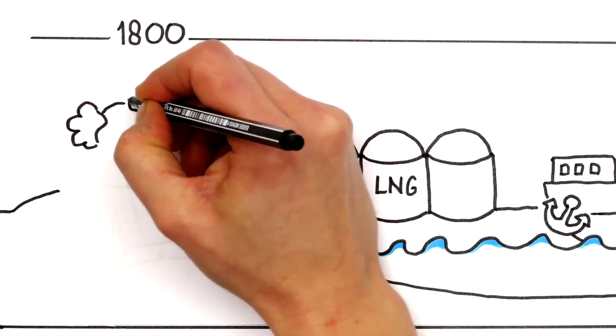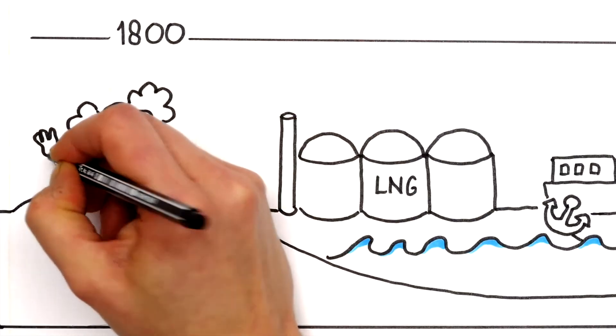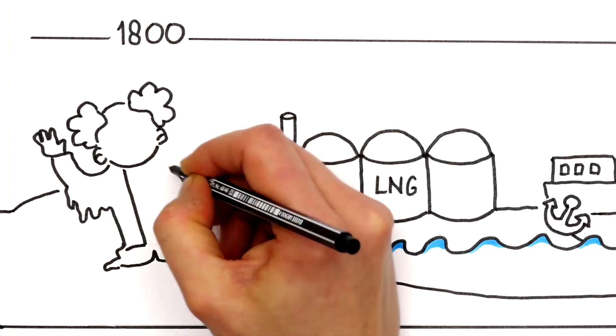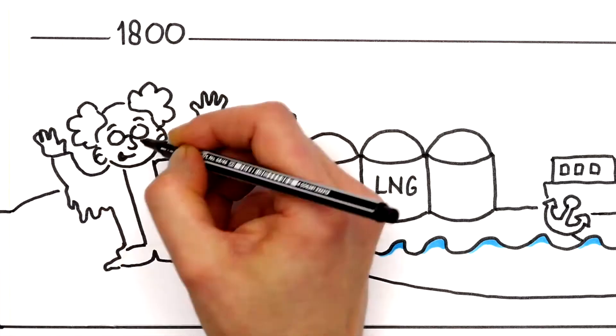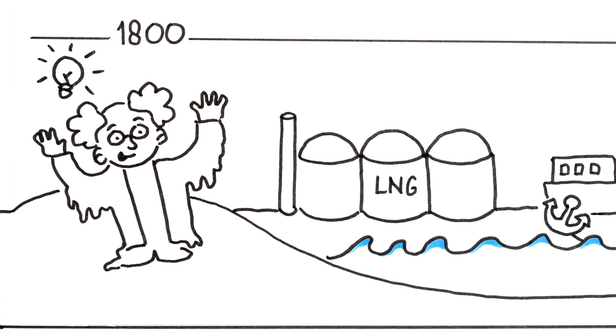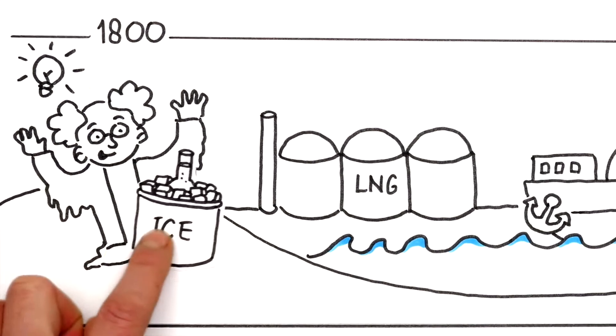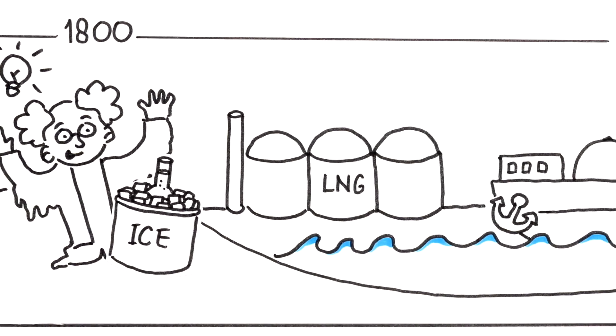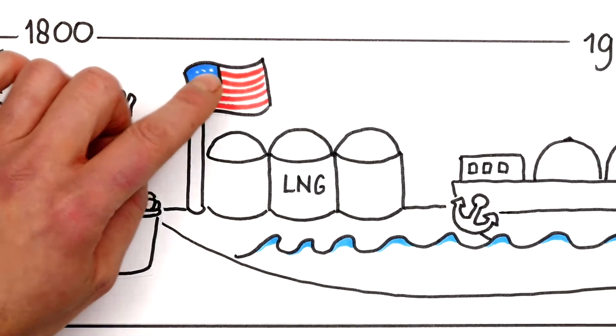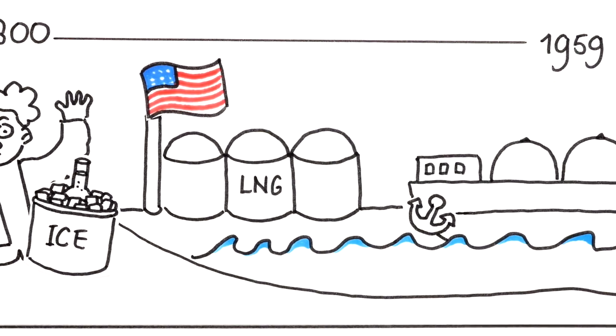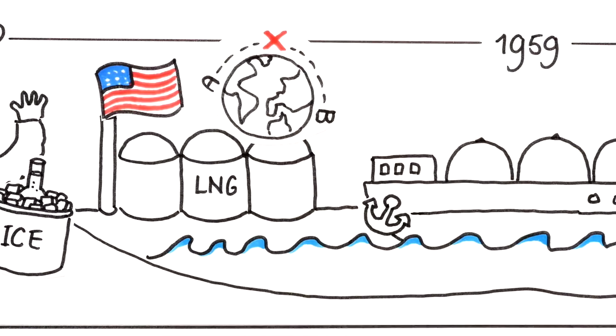The question is how did it all begin? The first experiments with liquefying natural gas were carried out in the 19th century by British chemist Michael Faraday. The Americans were the first to build a full-scale commercial LNG plant, but transportation was still a problem.